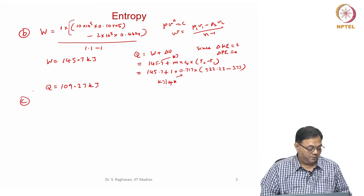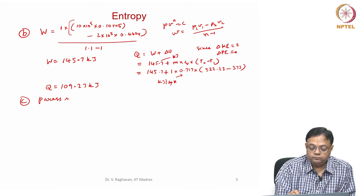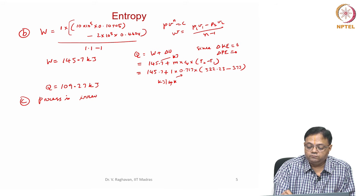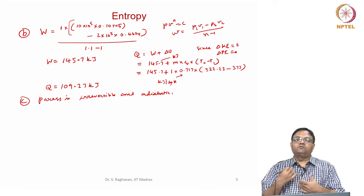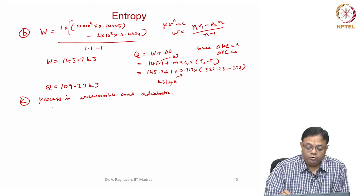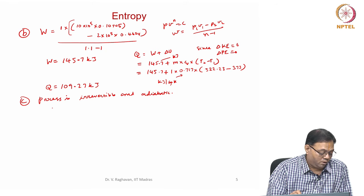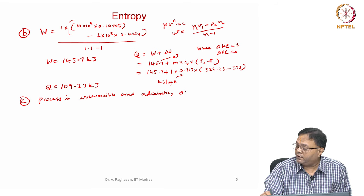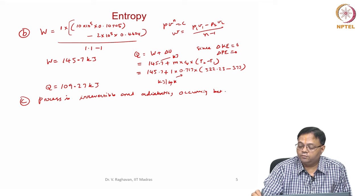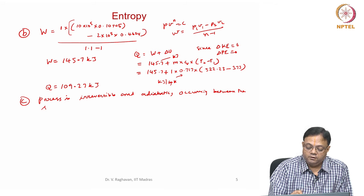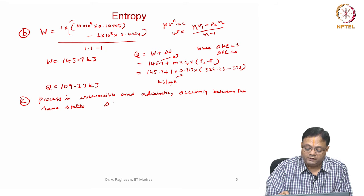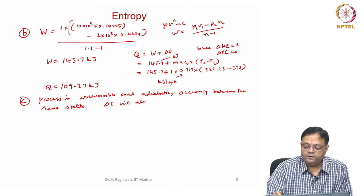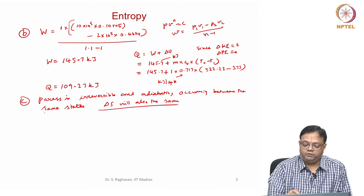The third part: the process is irreversible and adiabatic. The first process was polytropic and reversible. Now it is irreversible and adiabatic, but occurring between the same end states. So the final specific volume, final temperature are the same, and delta S will also be the same because entropy is a property.